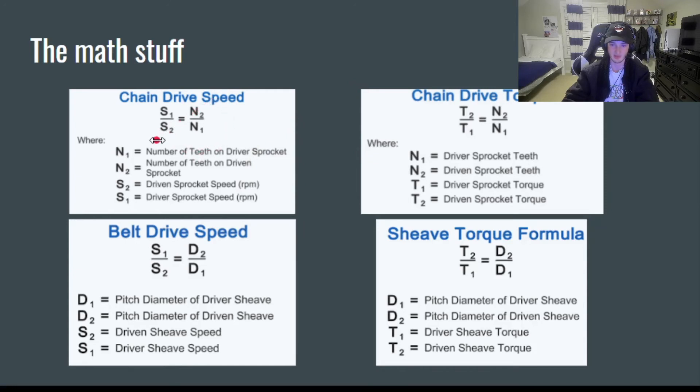You can see that S2 is down here and N2 is up here. And for torque, it's a direct proportion. You can see T2 is here and N2 is here.